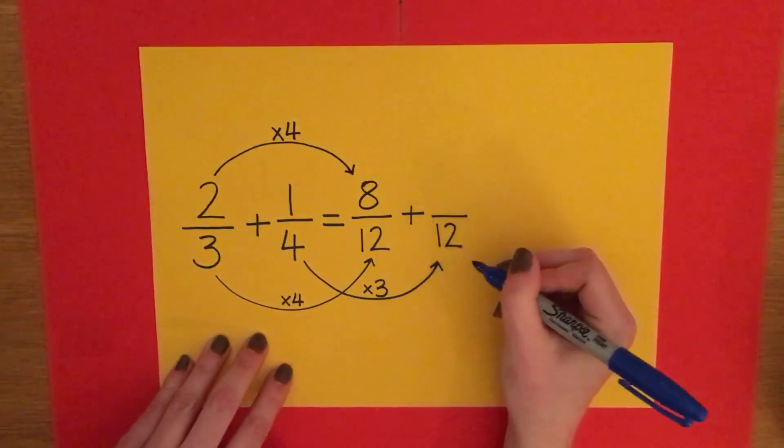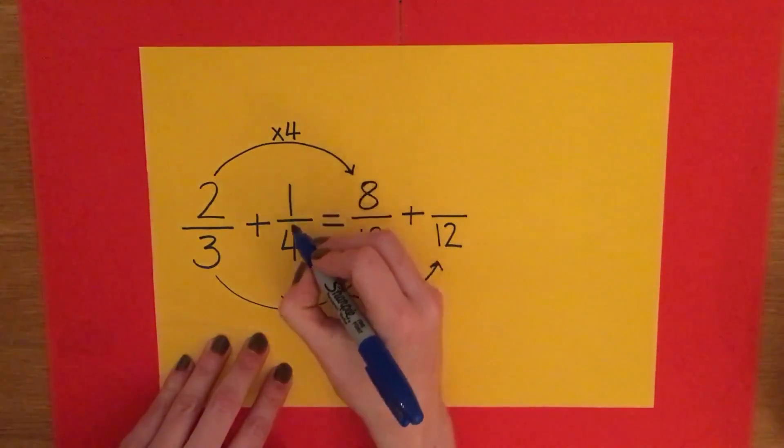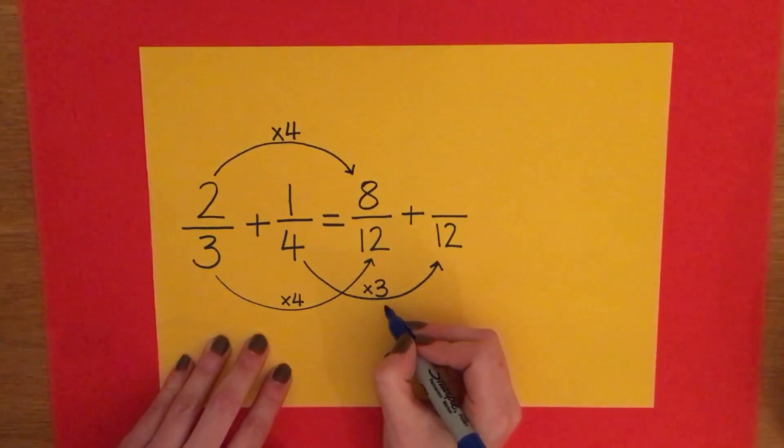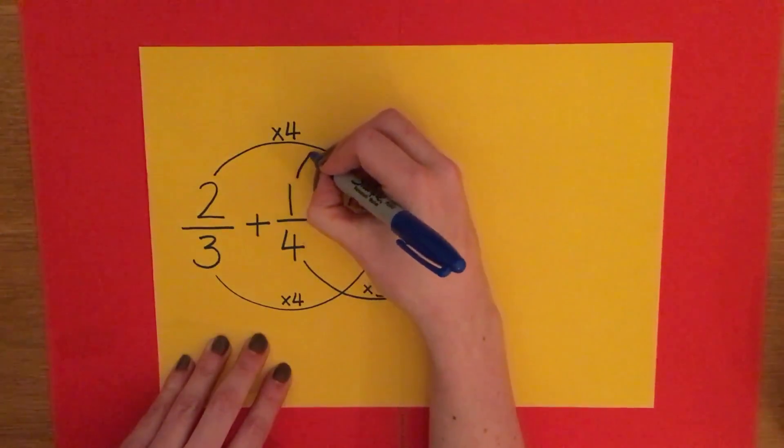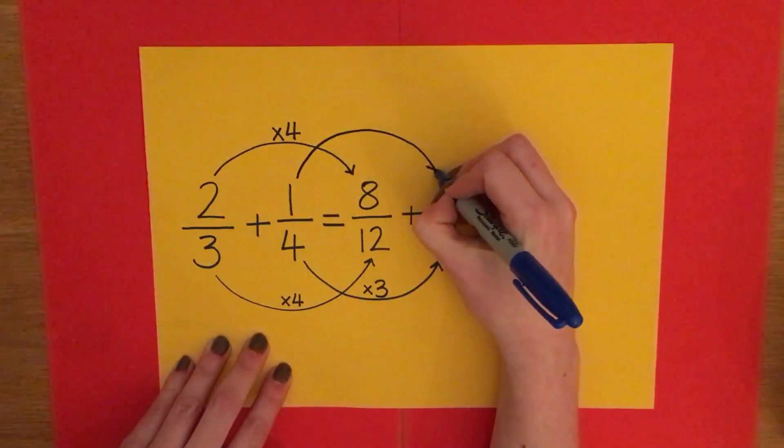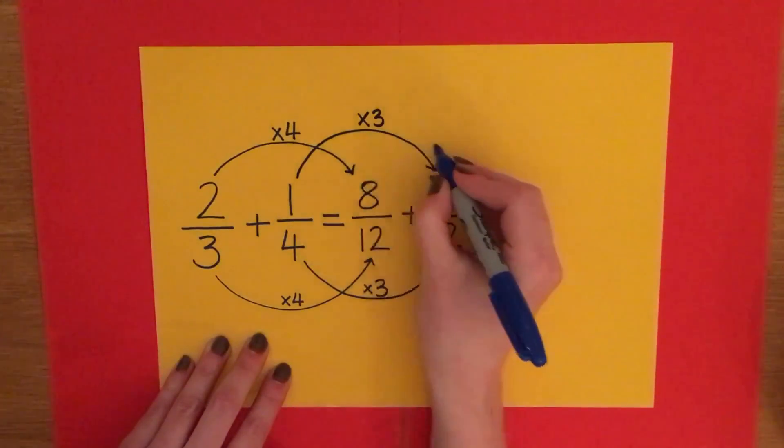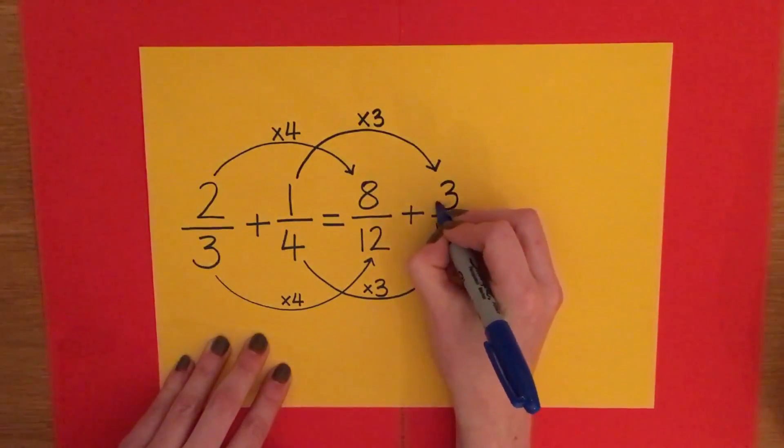Now onto the second fraction. To go from the four to the twelve I had to multiply it by three, and whatever you do to the bottom you have to do to the top. So I'm going to multiply the one by three and I'll get three.